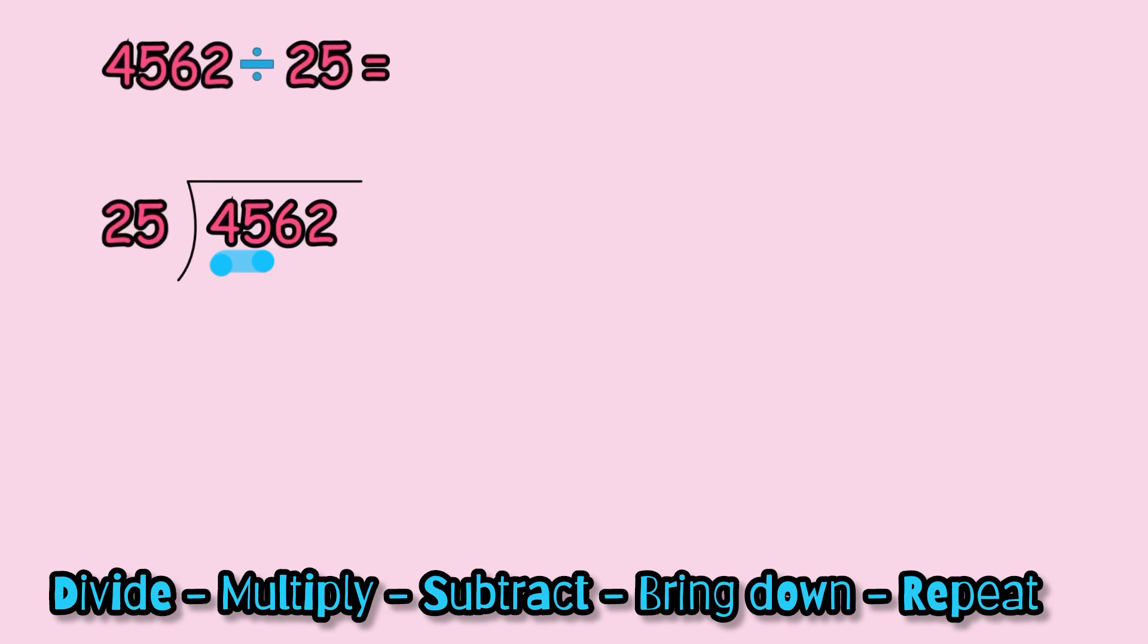This is the first number that we're going to be working on. We're going to see how many times can we put 25 into 45. It's not 2 because 25 times 2 is 50, so it must be 1, and we're going to write the number 1 at the top of our division bar. The next step is multiply: 25 times 1 is equal to 25. Then we have to subtract: 45 minus 25, 5 minus 5 is 0, 4 minus 2 is 2, so we got 20.